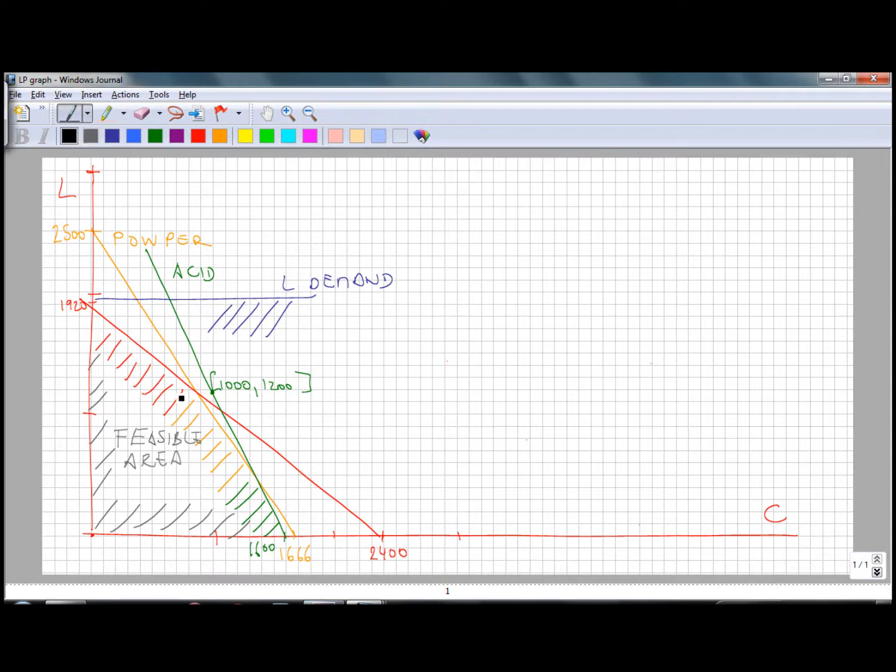So the feasible area is this shaded rectangle. Let's put some letters for the intercepts here. Within this rectangle we will find our optimum solution for our creams and lotion quantities.